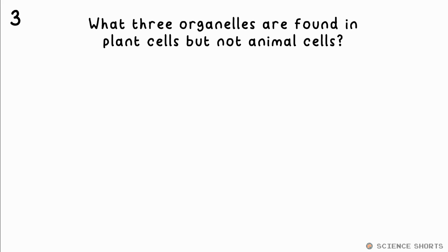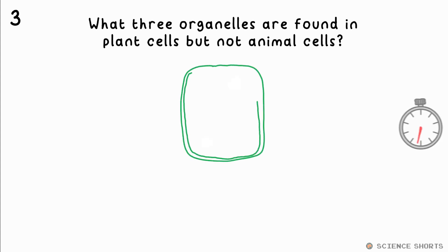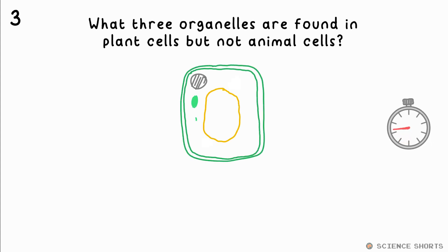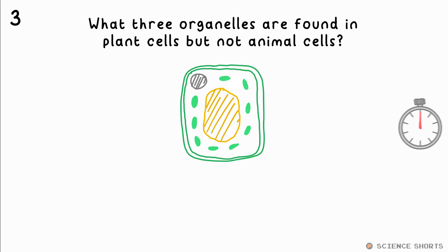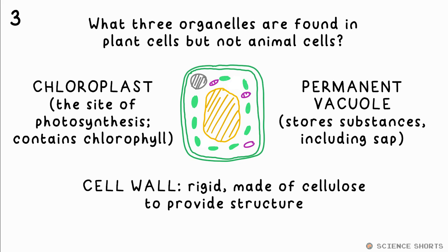What three subcellular structures or organelles are only found in plant cells? They have chloroplasts — that's where photosynthesis takes place. They have a permanent vacuole, where water, sap and other things are stored, and a cell wall, which is rigid due to being made from cellulose.